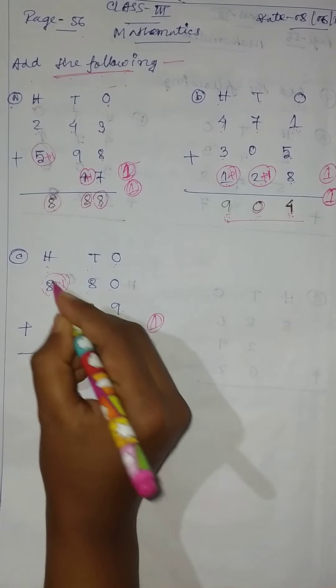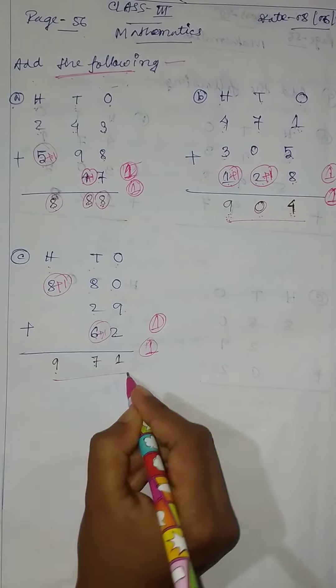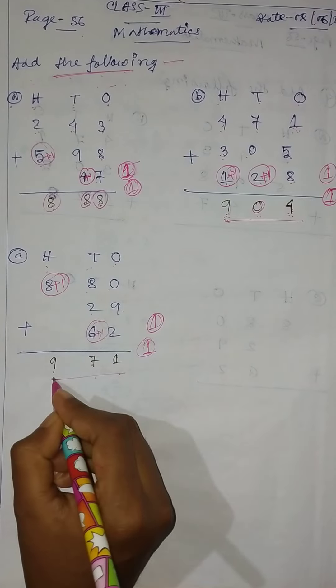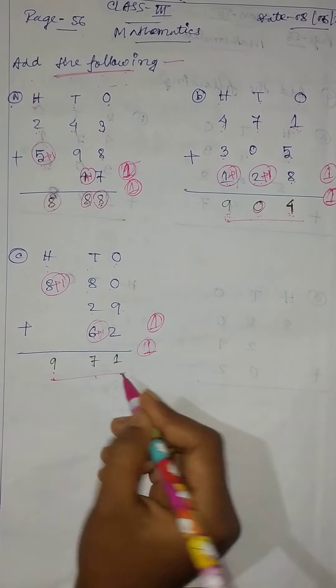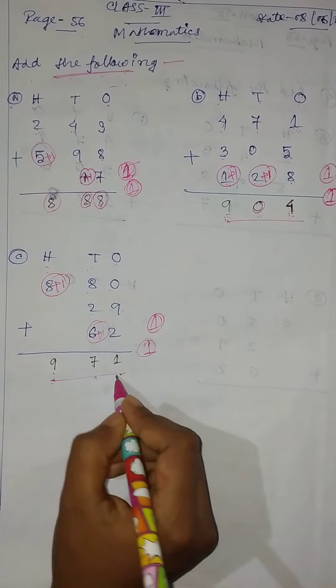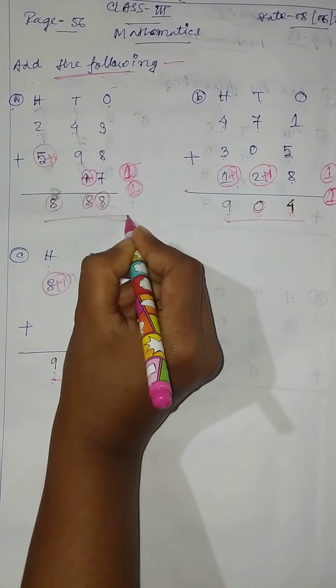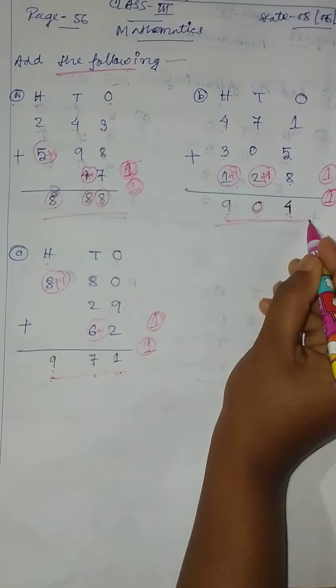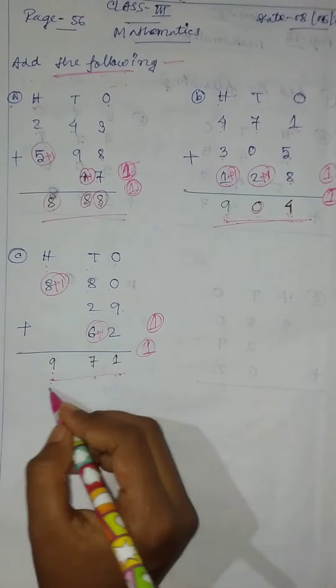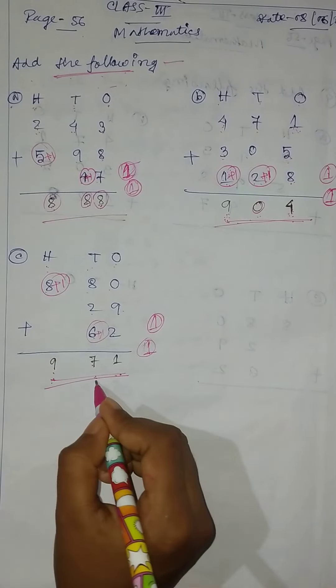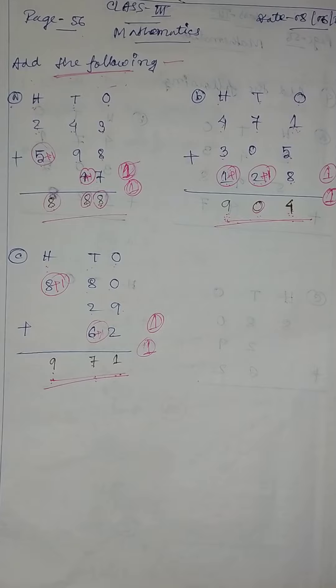8 plus 1 equal to 9, so answer 971. 971. So answer 888, 904, and 971. Thank you.